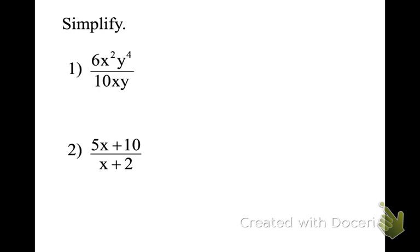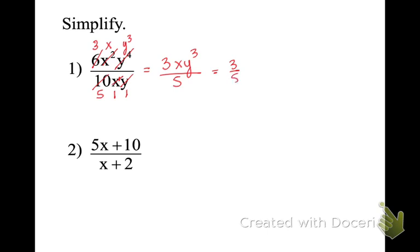Let's try number 1. Pause the recording and try it. The biggest numerical factor is 2 — they're both even numbers. 2 goes into both and I'm left with 3 and 5. The greatest amount of X's: pull 1 X out because that's the greatest the bottom has. For Y's, take 1 out and I'm left with Y to the 3rd. Final answer: 3XY³ over 5. You can also write that as 3/5 times XY³.